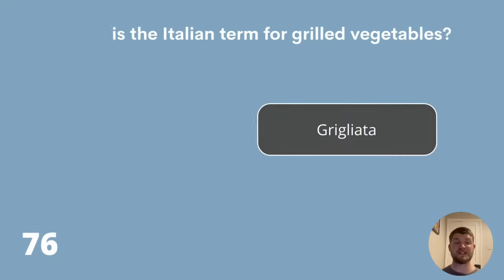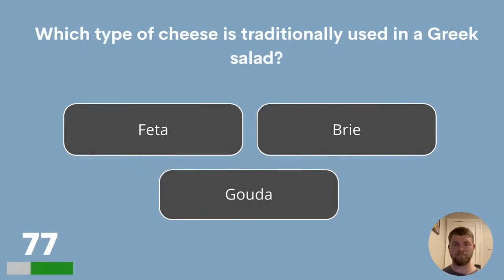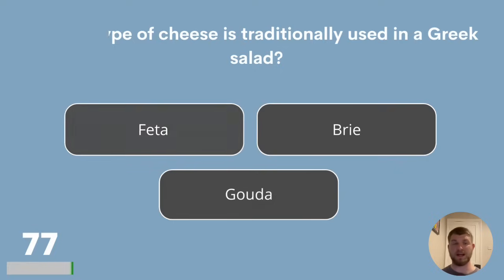Question 77. Which type of cheese is traditionally used in a Greek salad? Feta, Brie or Gouda? The answer is Feta.